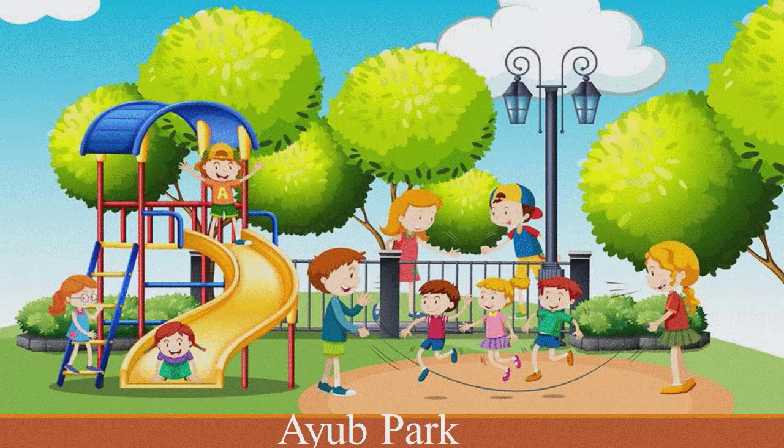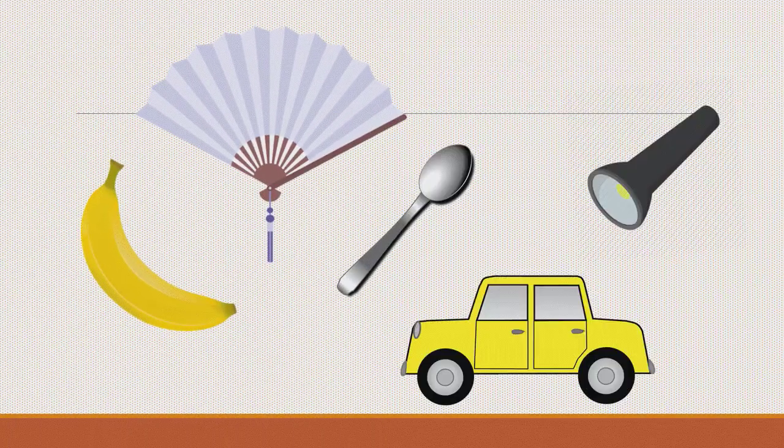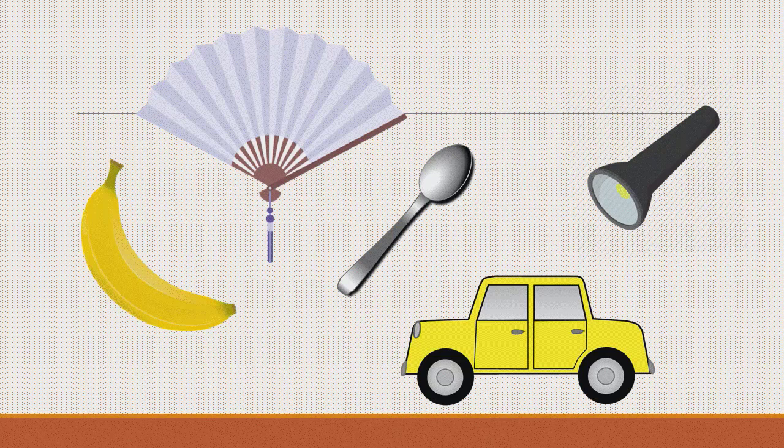All things in your environment are nouns. Even in your room you can find a number of things and they all are nouns. In this picture you can see a banana — a banana is a fruit and it is a noun. Then a hand fan is also a noun, a spoon, a toy car, and a torch — all these things are nouns. When you are sitting anywhere, look around yourself and you will find a number of nouns around you.